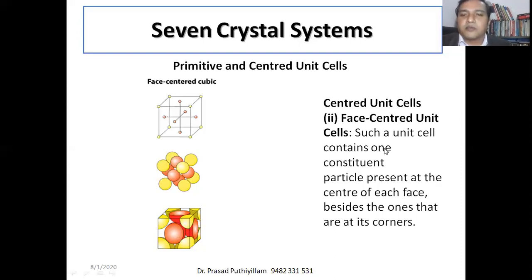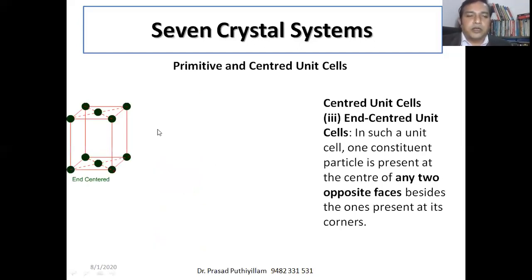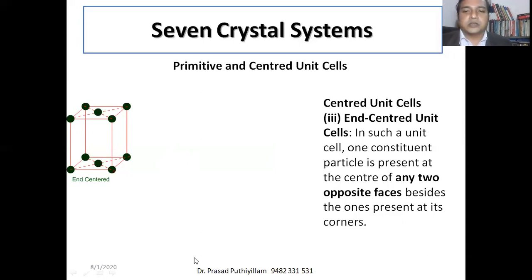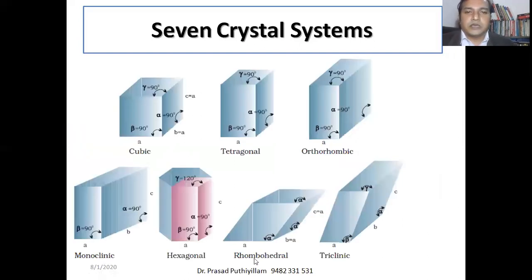The third type is the end-centered unit cell, which is similar to face-centered, but atoms or molecules are present only at two opposite faces in addition to the corner atoms. If any two opposite faces have atoms other than the corner atoms, it is called an end-centered unit cell.